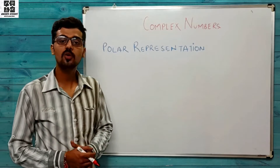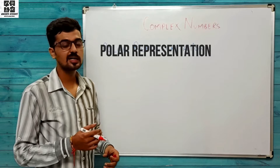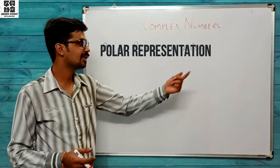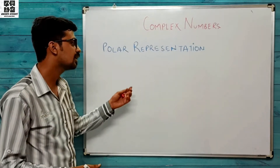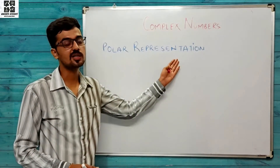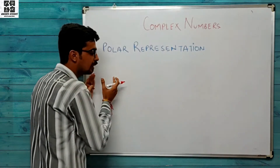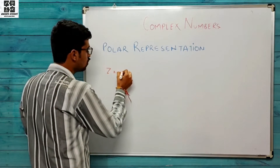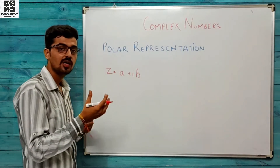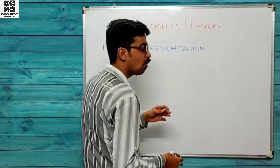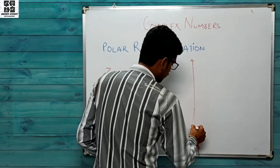Now let's study the polar representation of a complex number. Jab main aapko complex numbers introduce kar raha tha — pehli video mein aapne dekha hoga — maine aapko complex numbers ka representation already ek plane mein samjha rakha tha. Ab hum log z = a + ib ka ek naya way of presentation seekhenge, jo usi graph pattern pe depend karta hai.